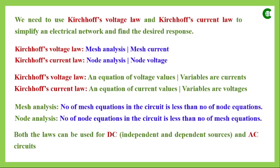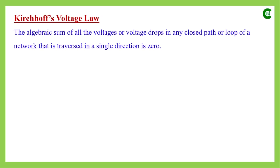Both laws can be applied for DC as well as AC circuits. Now we will learn those laws and simplify electrical networks using them. Starting with Kirchhoff's voltage law — KVL states that the algebraic sum of all the voltages or voltage drops in any closed path or loop of a network traversed in a single direction is zero.